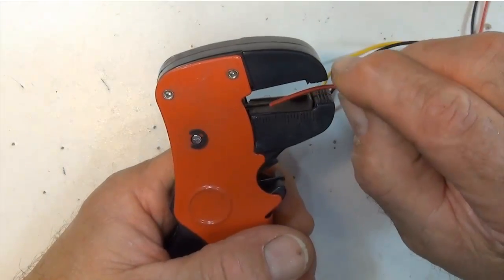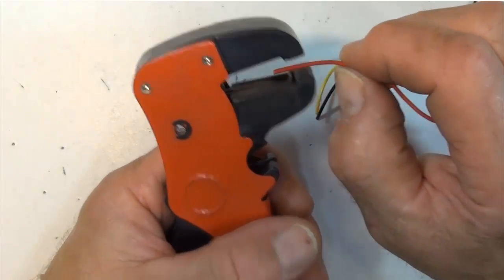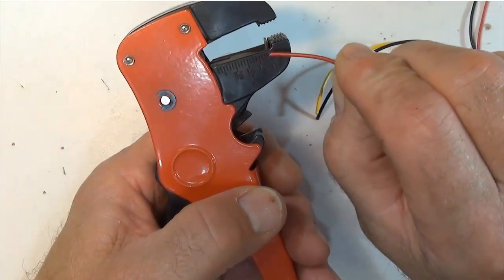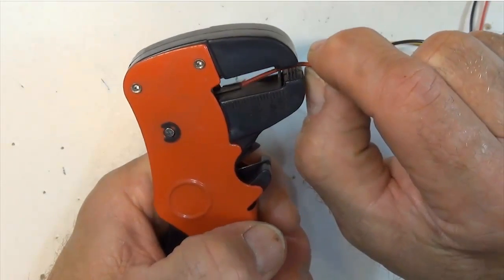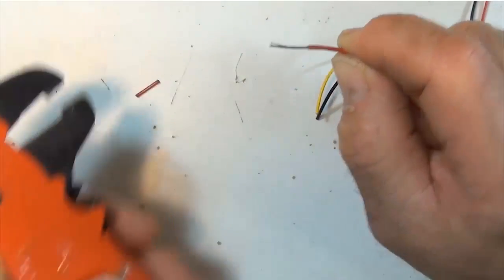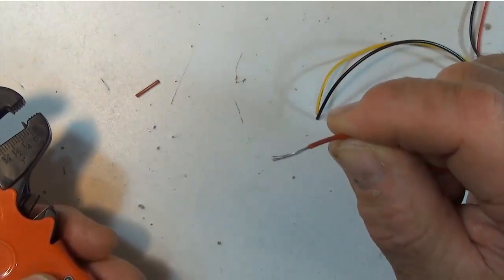Here I'll show you how the dollar store wire stripper works. They actually have a little bit of a gauge here telling you how much wire you're stripping. You just put it into, say, three quarters of an inch, and there you go - you have your wire stripped.